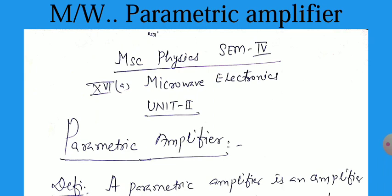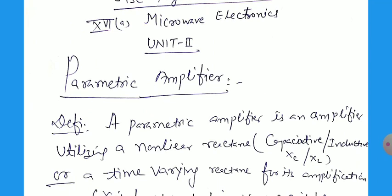As is clear from its name, it is related with the parameter. What is the meaning of the parameter? Which type of parameters are used for this amplifier? So here we start the definition of the parametric amplifier. A parametric amplifier is an amplifier utilizing a non-linear reactance.